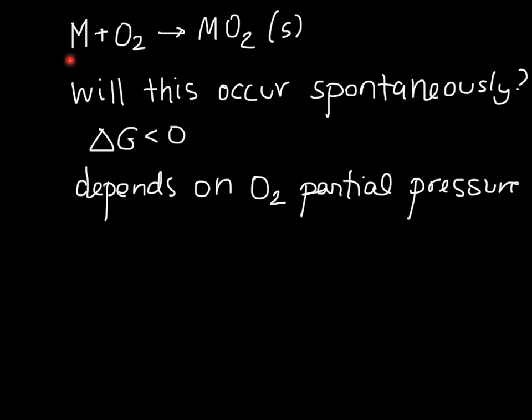or if the oxide will decompose and the reaction will move in this direction. It turns out that this system will be in equilibrium. So the metal, the oxygen, and the metal oxide will be in equilibrium when delta G for the reaction is equal to RT ln PO2.